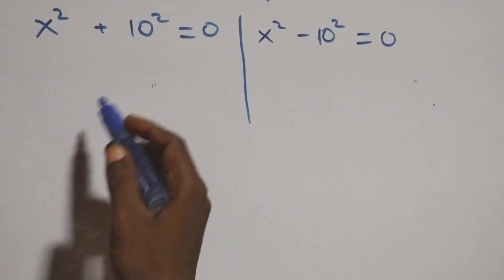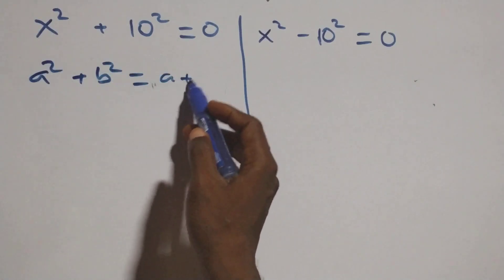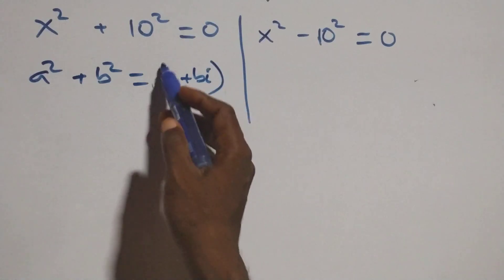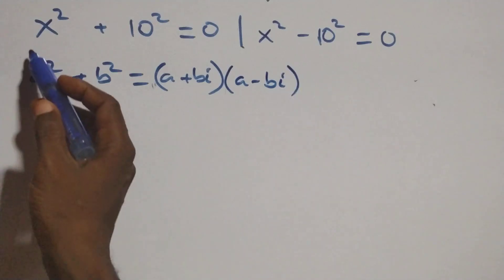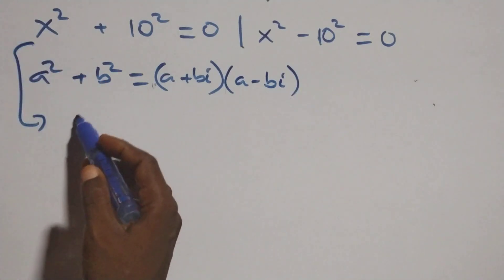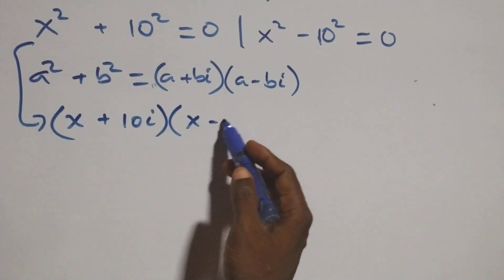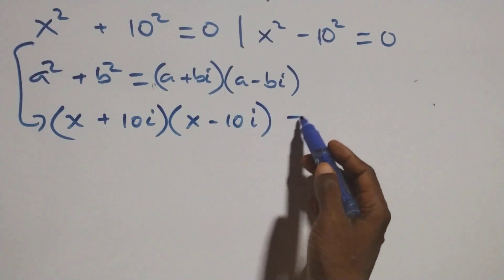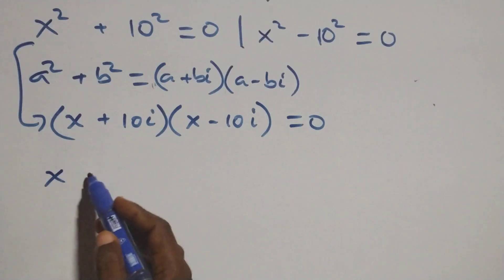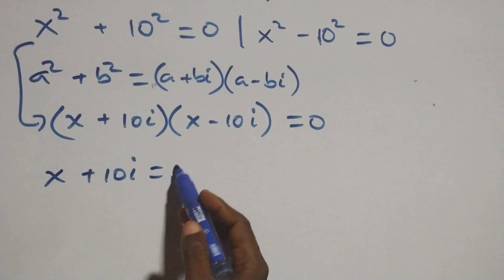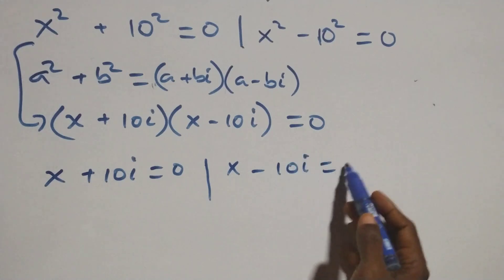For the first case, x squared plus 10 squared equals zero. We use the identity a squared plus b squared which can be written as (a + bi)(a - bi). So this becomes (x + 10i)(x - 10i) equals zero. This gives two possible cases: x plus 10i equals zero, or x minus 10i equals zero.